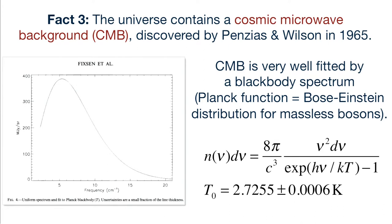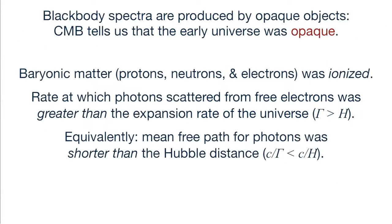The number density of photons as a function of frequency follows a gorgeous, beautiful blackbody curve, and the temperature is 2.7255 plus or minus 0.0006 Kelvin — a very well-measured temperature. Blackbody spectra are produced by opaque objects in which photons and absorbers and scatterers come to the same temperature through kinetic equilibrium. So if you want a blackbody spectrum, you have to have an opaque source. Stars are opaque objects that glow in the dark — pretty good blackbodies — and the cosmic microwave background is a beautiful blackbody, which means the early universe was opaque.